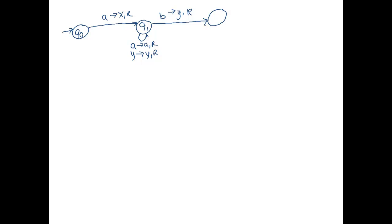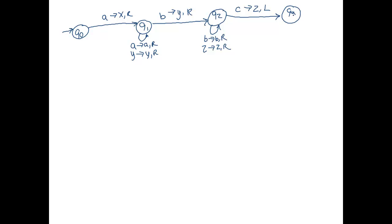Now, when we're scanning for C's in state Q2, we skip over any extra unchecked B's and any Z's. Z's are C's I've already seen. When I see a C, I replace it with a Z and move left. I don't need to move further right. After doing this, it means I've matched my A to my B to my C — that first phase is done, and we go left now.